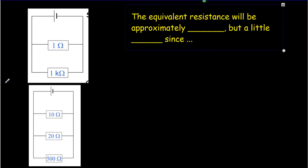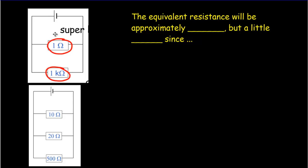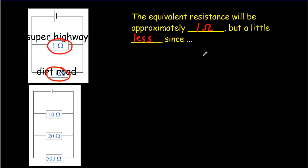Now let's look at another extreme: a really small resistor and a really big resistor — 1 ohm compared to 1000 ohms. The 1-ohm resistor is like a superhighway, because it's really easy for current to go down it. But the 1000-ohm resistor is like a dirt road — not much traffic can go down it at all. The dirt road isn't going to help traffic much, so basically all the traffic goes down the superhighway. That means the equivalent resistance will be approximately 1 ohm, but just a little bit less — maybe 0.99 ohms — because a small trickle of current can go down the 1000-ohm path.